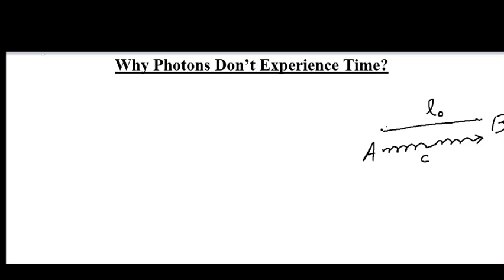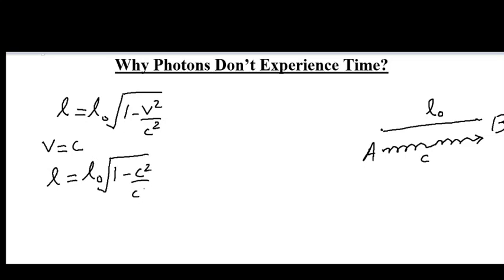For the photon, this length between A and B will be equal to L, which can be related to L0 as L equals L0 times the square root of 1 minus V squared over C squared. As here the speed of the photon is C, the actual length for the photon will be L equals L0 times the square root of 1 minus C squared over C squared. They will cancel and we get L equals 0.